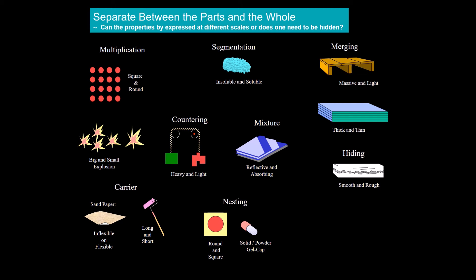A round shape can be nested inside a square shape to hide its roundness. Inflexible chain links can interact with each other in such a way to make the whole flexible. Flexibility and inflexibility are manifested at different scales.